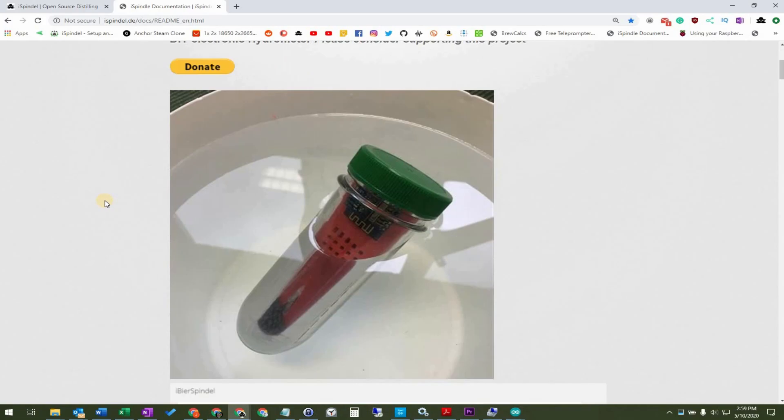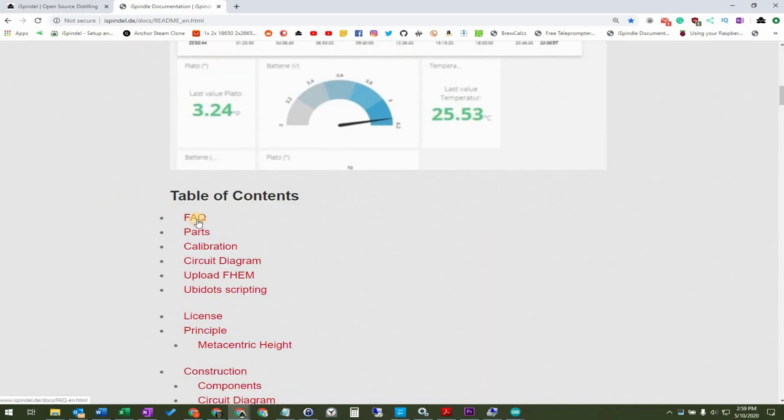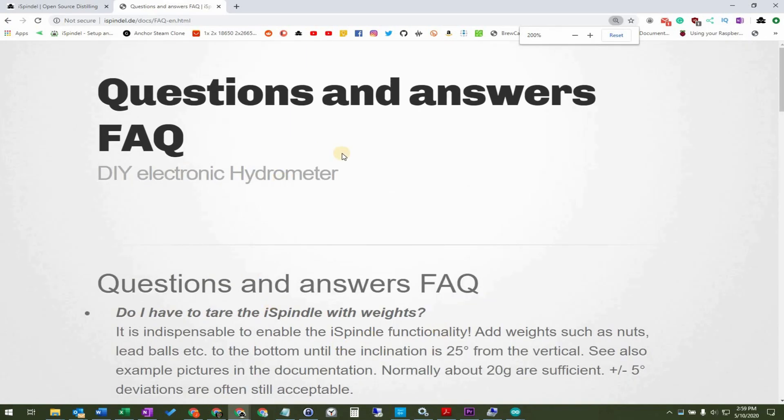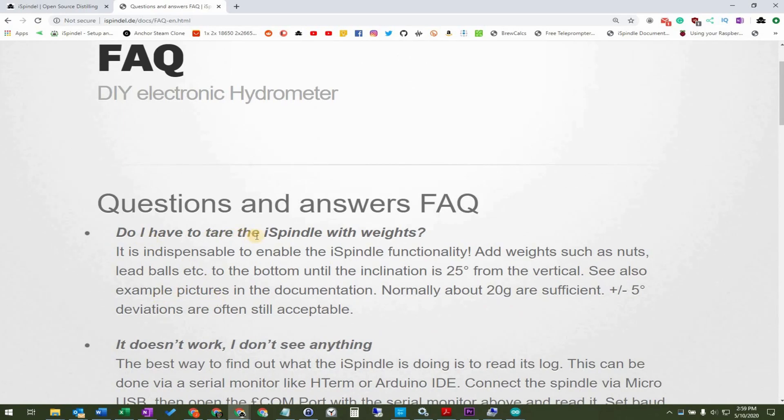Scroll down to the table of contents and click on FAQ. You can see that the very first frequently asked question is about calibrating to 25 degrees in pure water. More information can be found in the link to the blog post in the description down below.